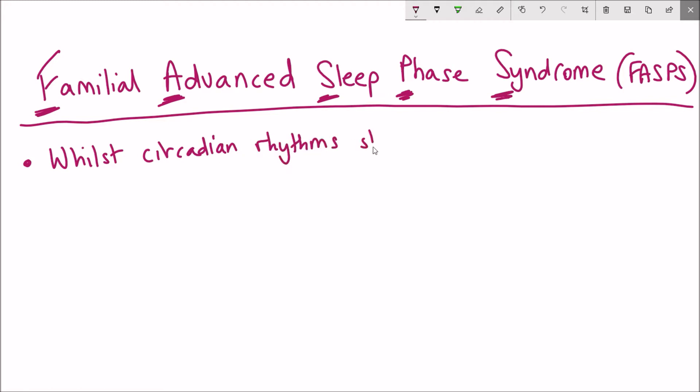Also given by the name, FASPS is an advanced sleep phase syndrome. What this means is that the circadian rhythm is advancing at a faster rate than what it should normally do.